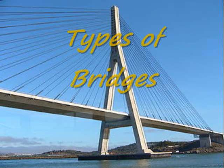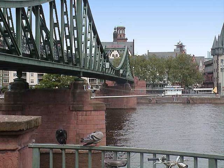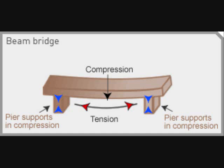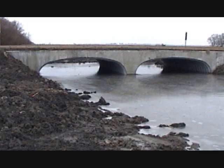Types of Bridges. Beam bridges are horizontal beams supported at each end by piers and underpinnings in the middle. The piers take the full weight of the load, so the bridge must be built from resistant materials. One disadvantage of the beam bridge is that the beams tend to sag.